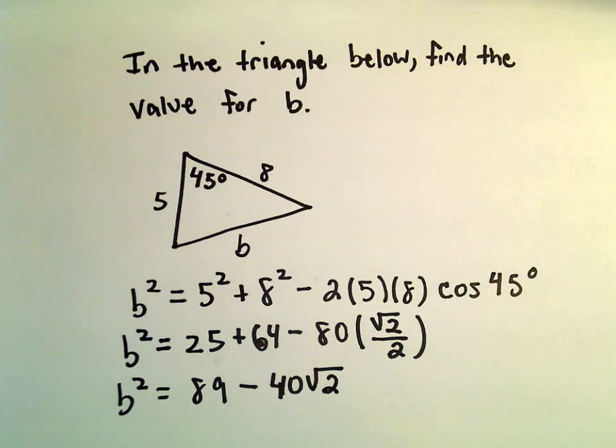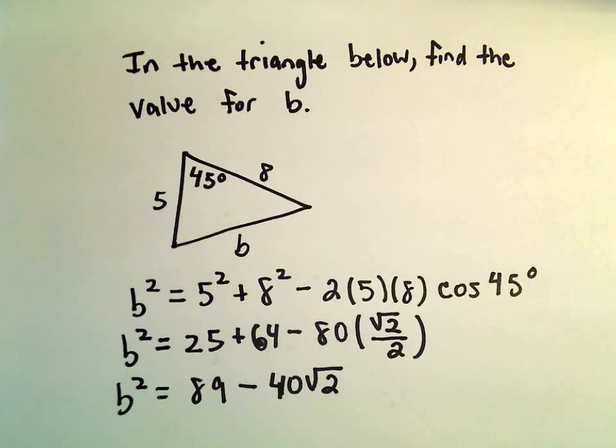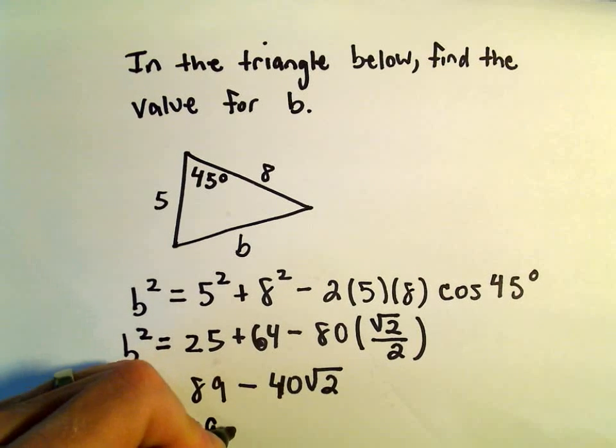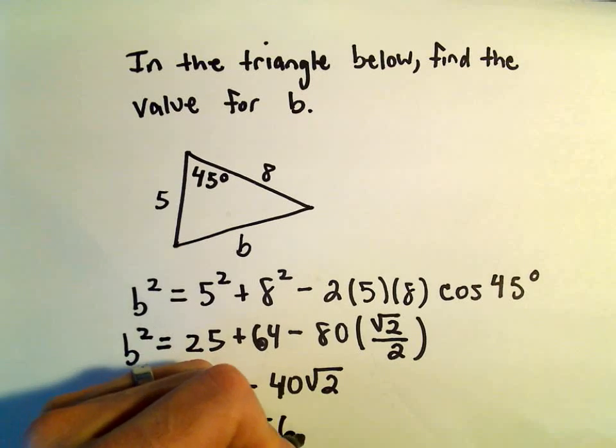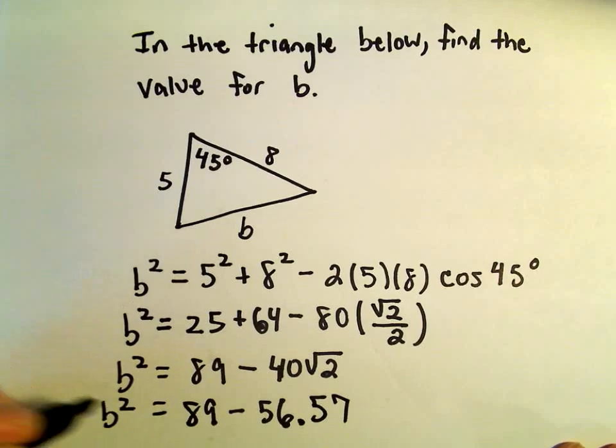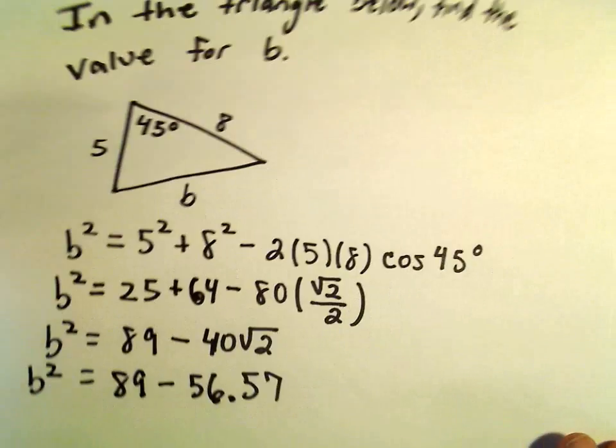I'm going to go ahead and get some decimal approximations here. So, the square root of 2, if we multiply that by 40, so the square root of 2 times 40, I'm getting this to be 56.57 after rounding, so that's going to be our value here for b squared.